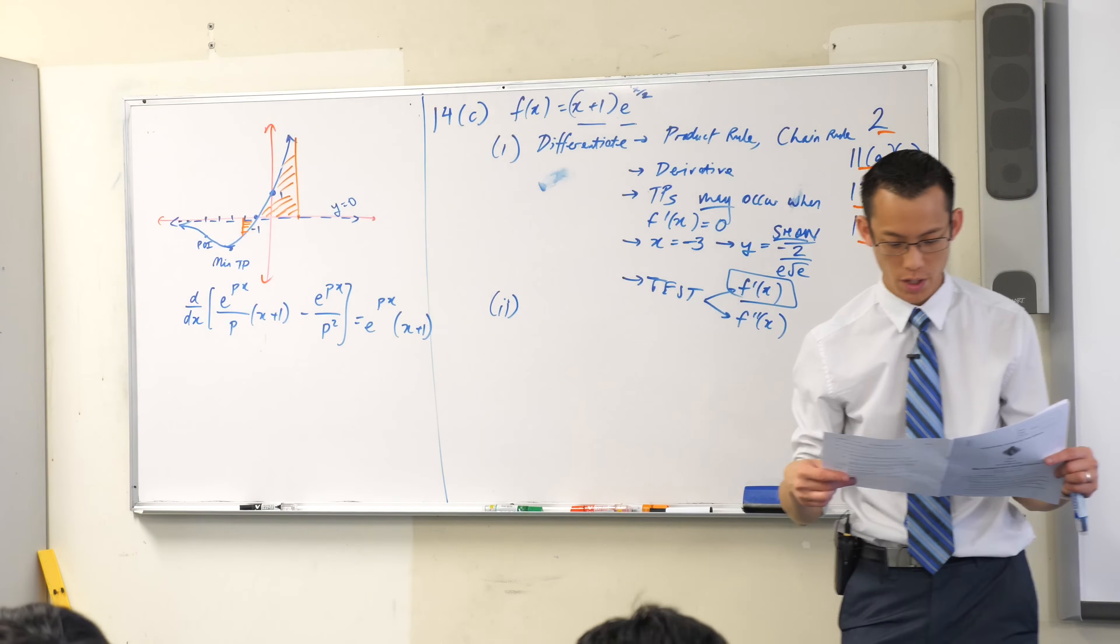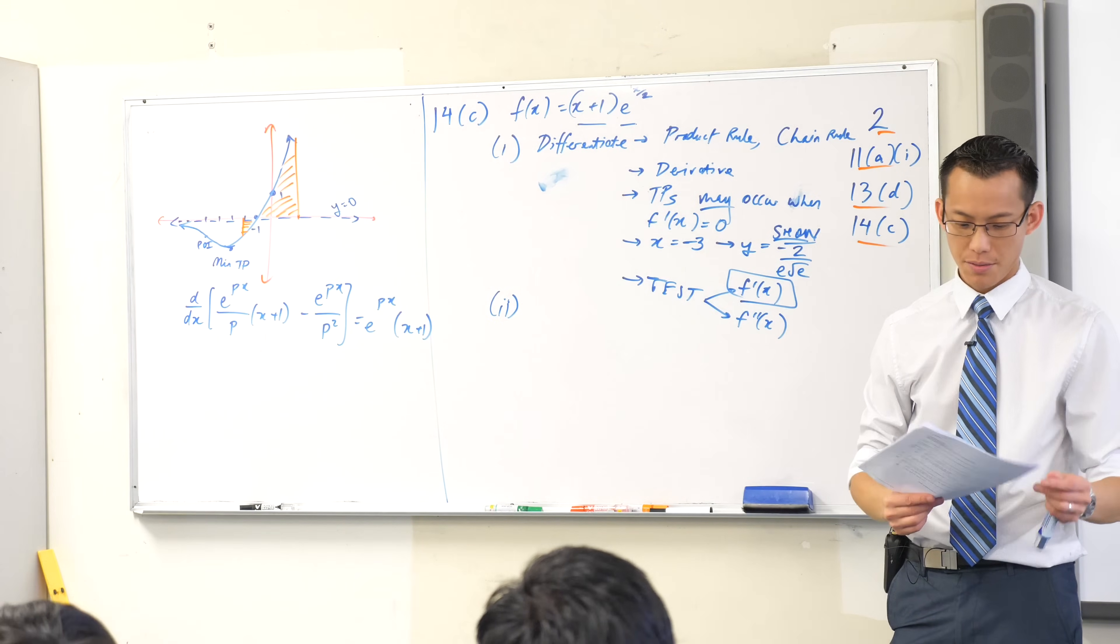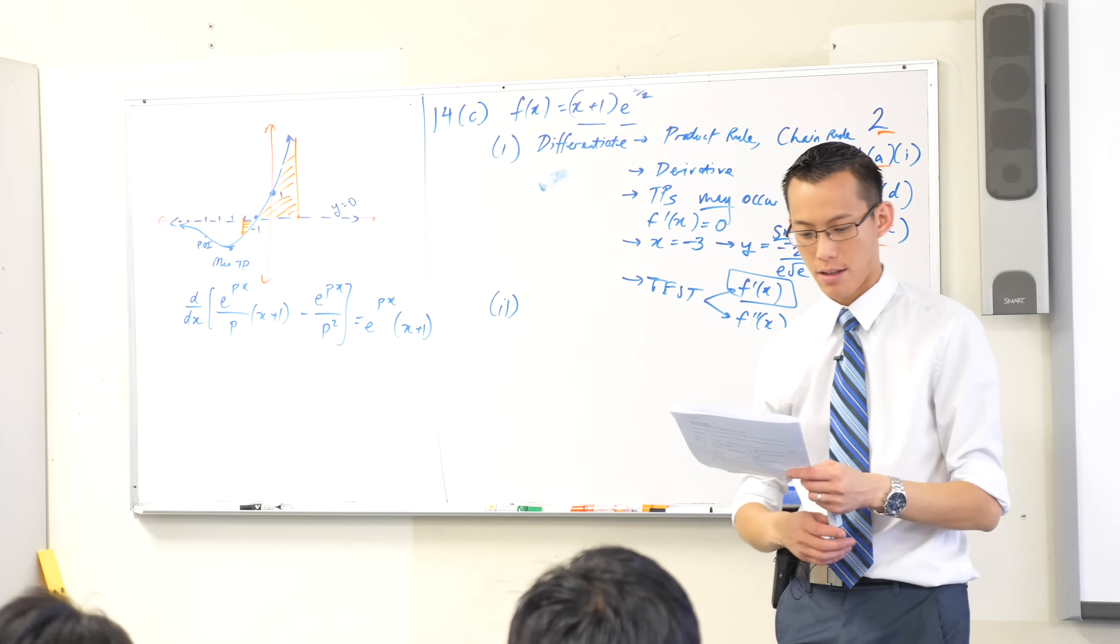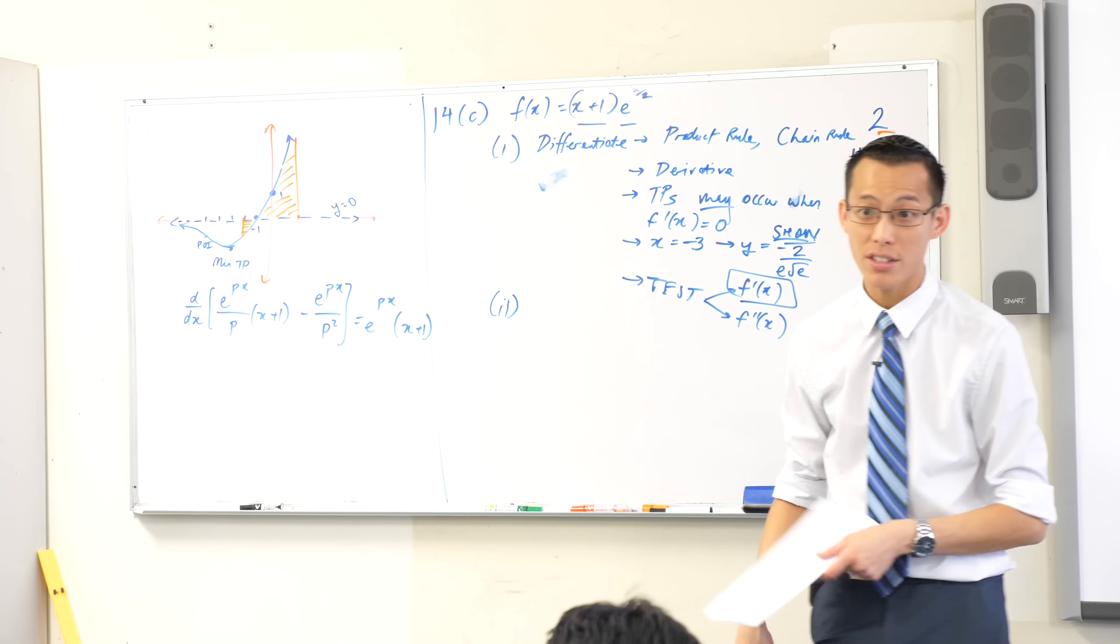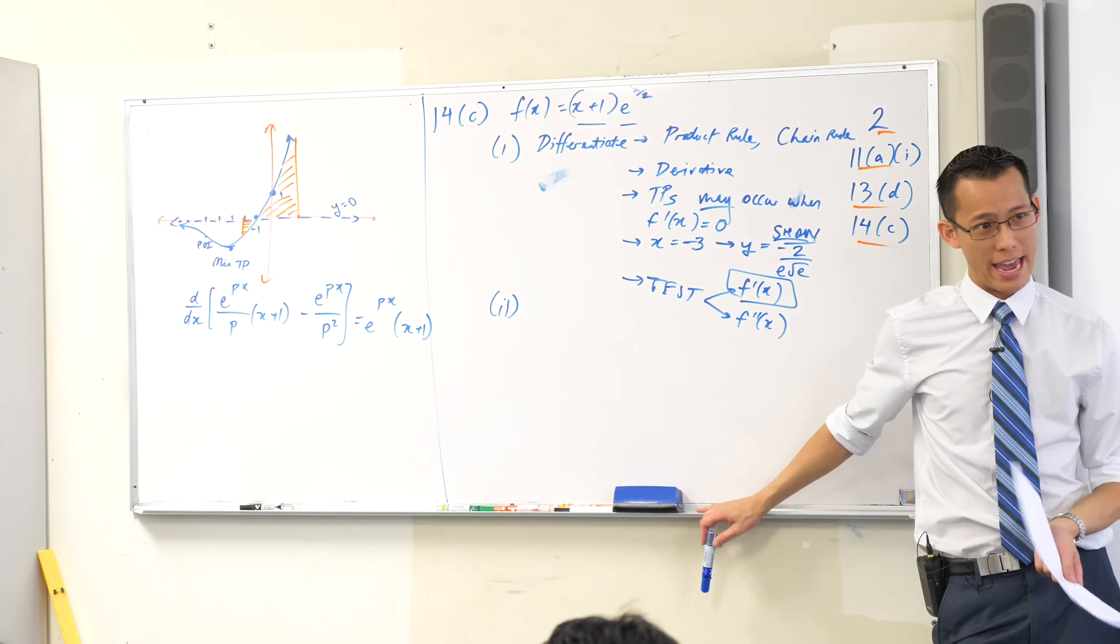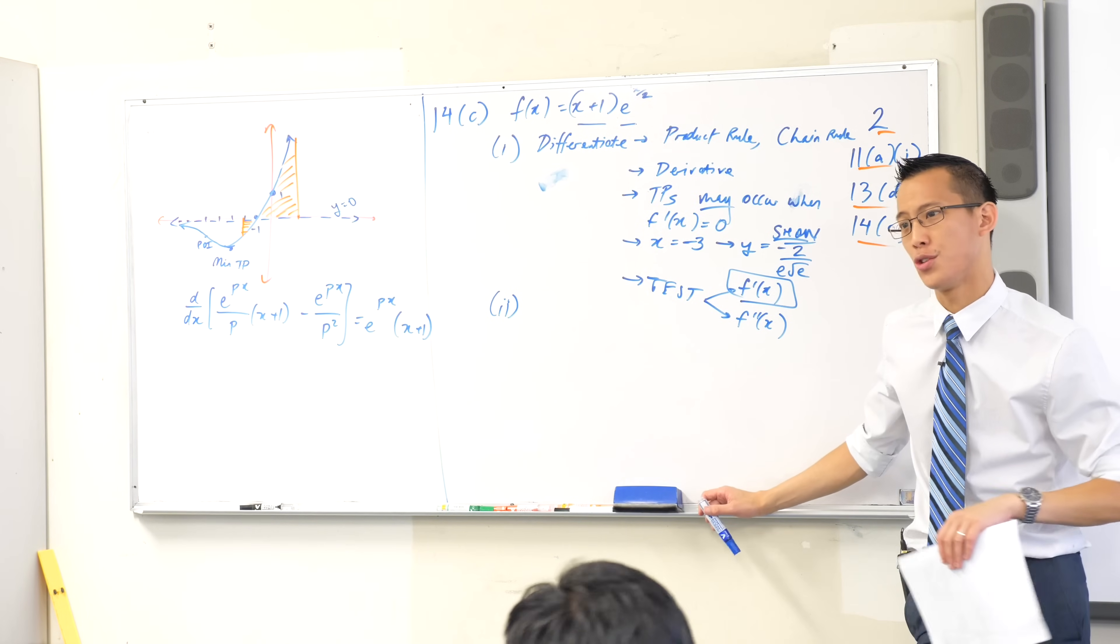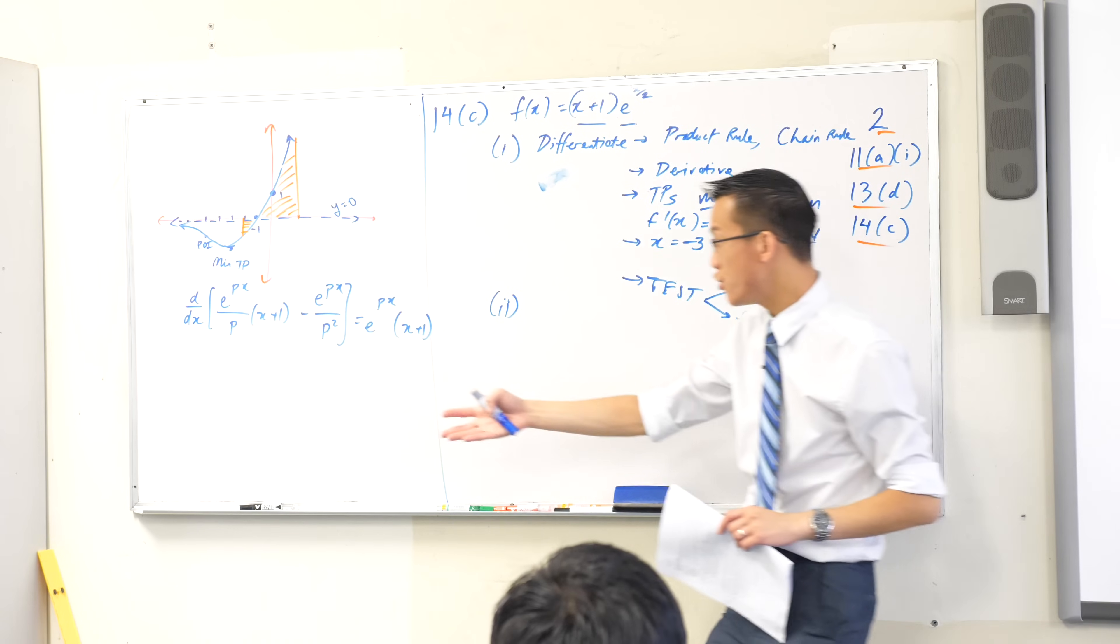You see question 12, part A? Question 12, part A is the same question. It's exactly the same question. It's just dressed up a little differently. In question 12, part A, we held your hand. What did we tell you to do? We told you to differentiate. And then you get something like this. You do working like this. You differentiate something, and you get an answer at the end.